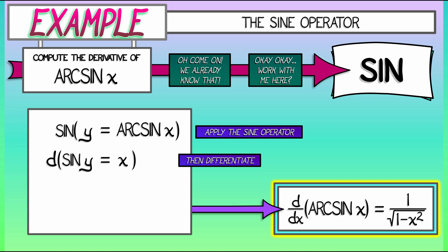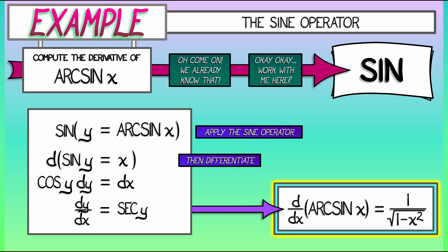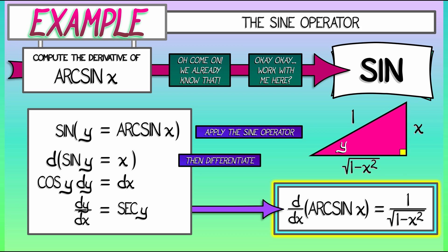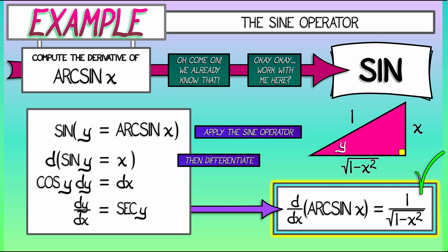Differentiating both sides gives, on the left, cosine of y dy, and on the right, dx. Solving for dy/dx gives us secant of y. That doesn't look like what we're supposed to get — we have to set up a right triangle with a little geometry to encode the fact that y is an angle whose sine, opposite over hypotenuse, equals x. Taking the secant of y then gives us 1 over the square root of 1 minus x squared.